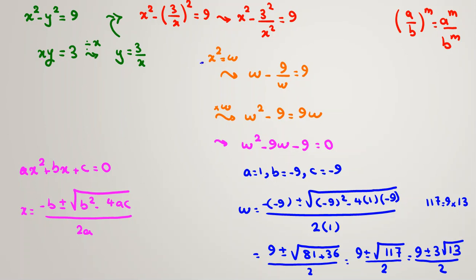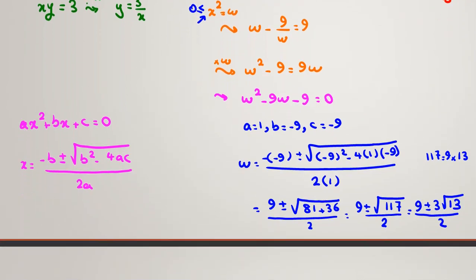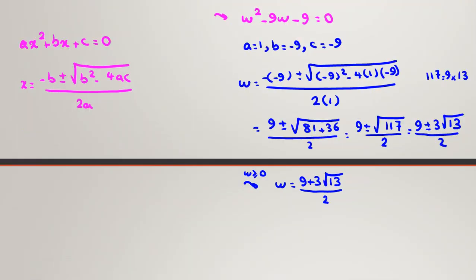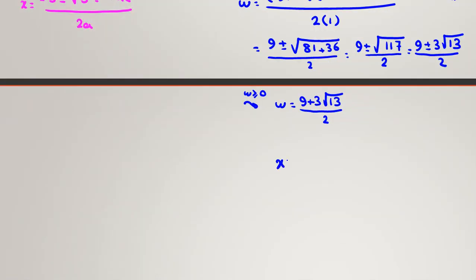Since w represents x squared, and x is a real number, w must be at least 0. Since 9 is less than √117, the minus case would give a negative value. Therefore we only consider the plus sign, and w equals (9 + 3√13) / 2.